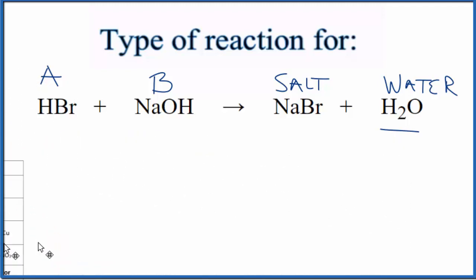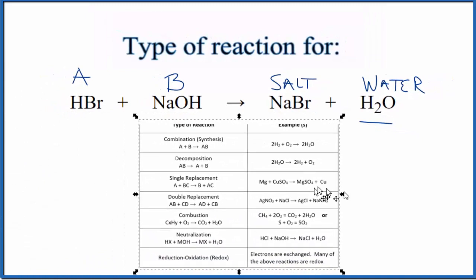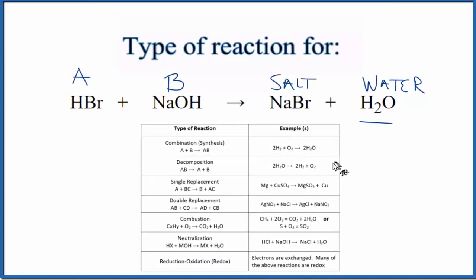Let's take a look at a table of common chemical reactions. So these are the common types of chemical reactions and we can see our neutralization reaction right here. But this is also considered a double replacement reaction. That's because the Na and the H, they switch places, they replace each other.